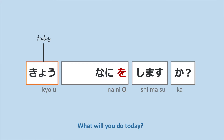今日何をしますか？ します means 'do,' か is the question marker, and 何 means 'what.' So 何をしますか？ means 'what will you do?' And with 今日, it means 'what will you do today?'